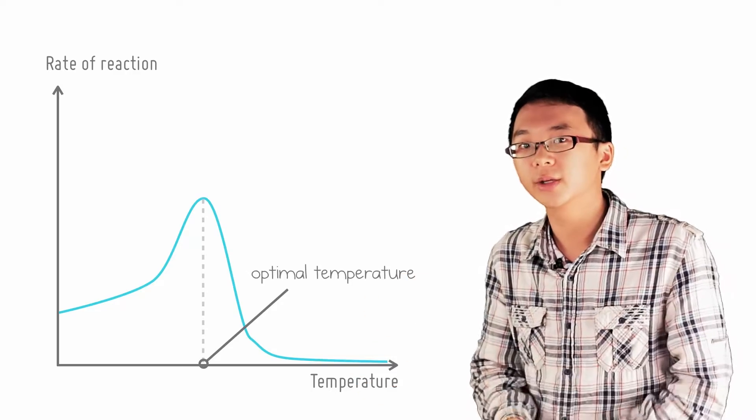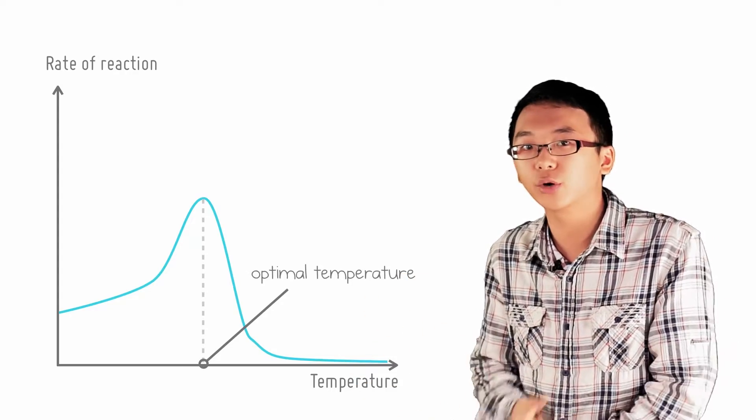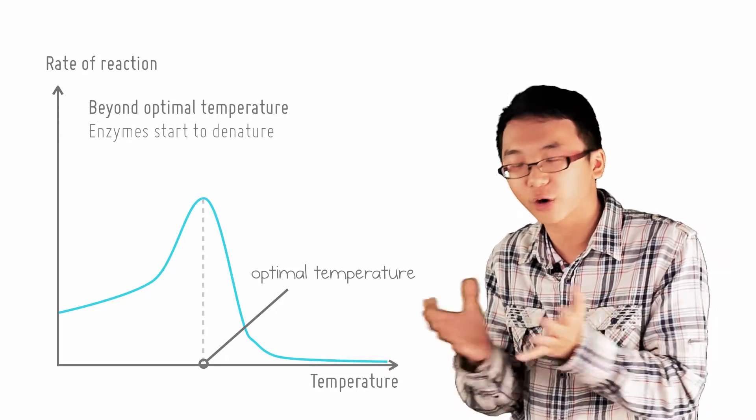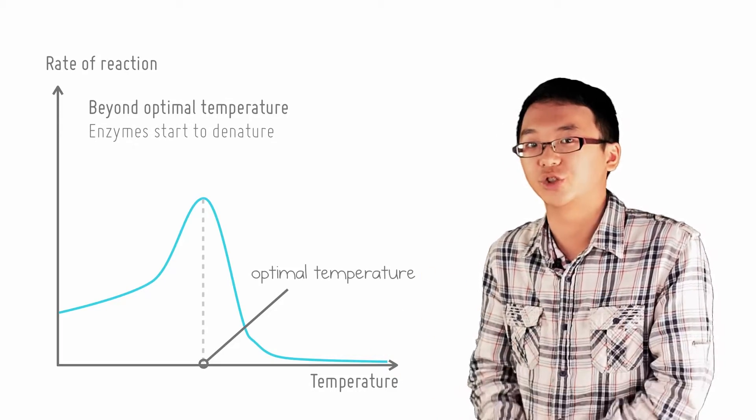With these bonds broken, the 3D conformation of the enzyme can no longer be maintained and changes. This change in the enzyme structure from its functional conformation is known as denaturation.